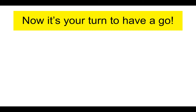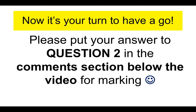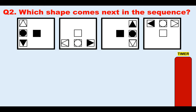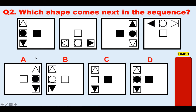Now it's your turn to have a go. Please put your answer to question two in the comments section below the video for marking, and we'll come on here each day and mark them for you. Question two: which shape comes next in the sequence? Is it A, B, C, or D? There is a 15-second timer on the right-hand side. If you can answer this in 15 seconds, you are doing really well because that is a tough timeframe. If you find the timer is too short, just pause the video — it's important that you understand the process. Don't forget: identify the pattern, eliminate any incorrect answers, and then choose the correct one.